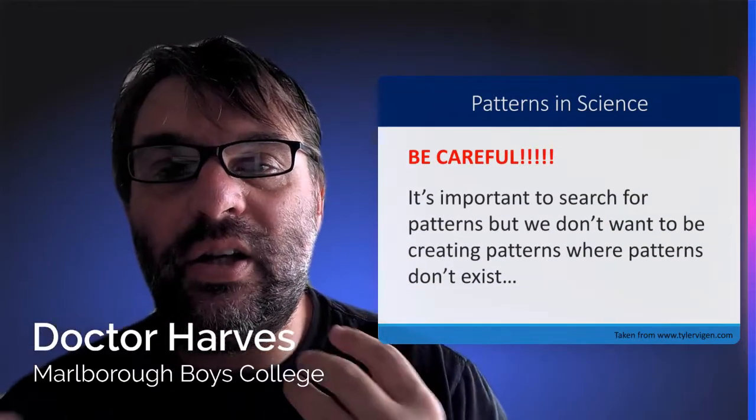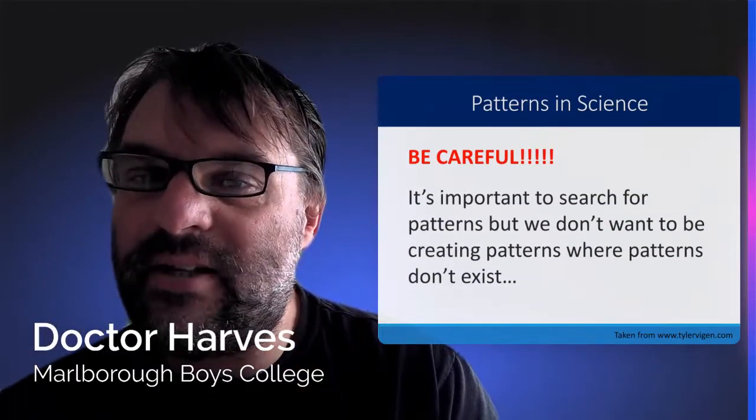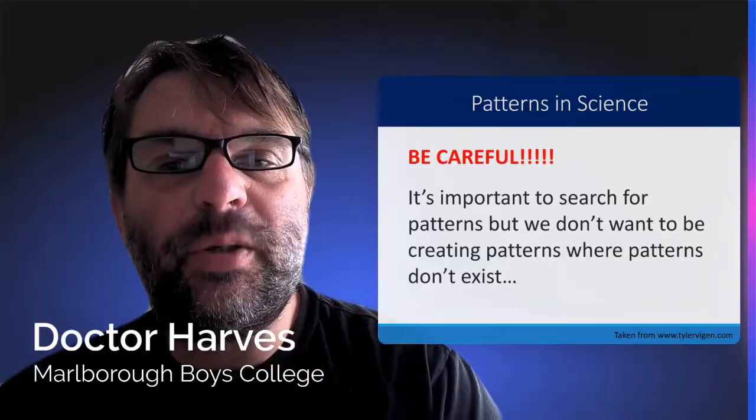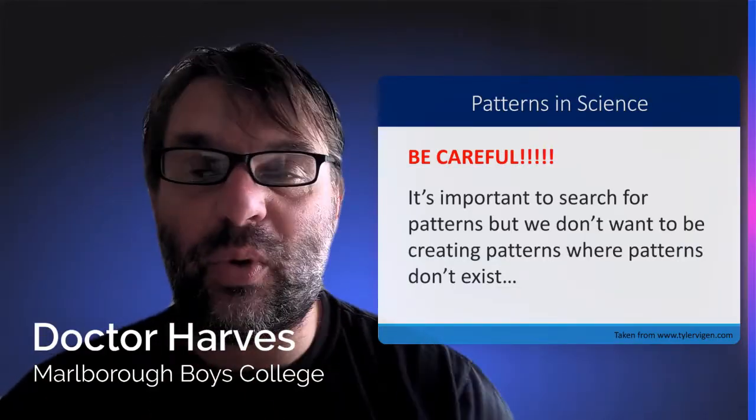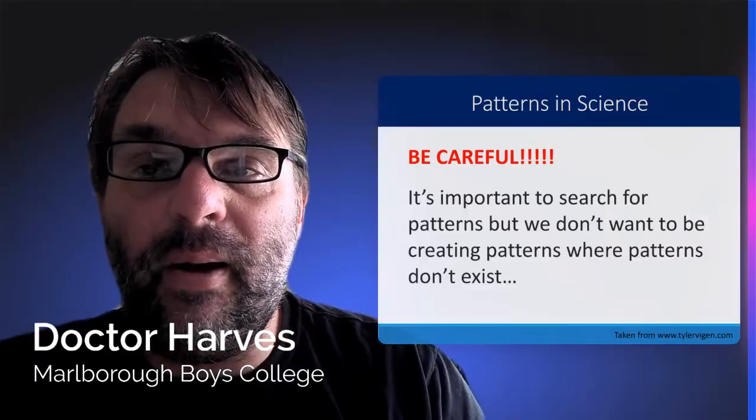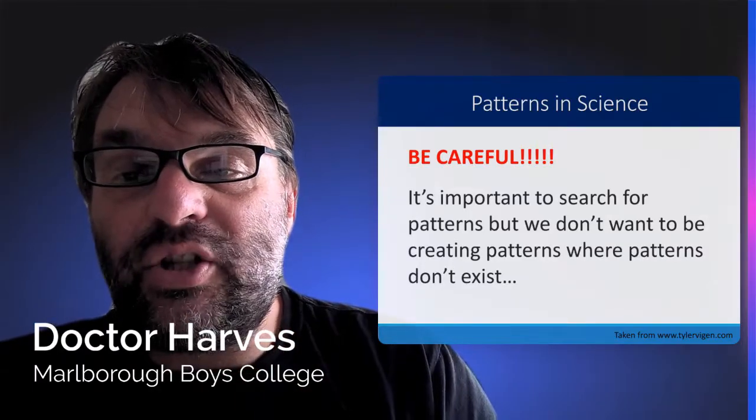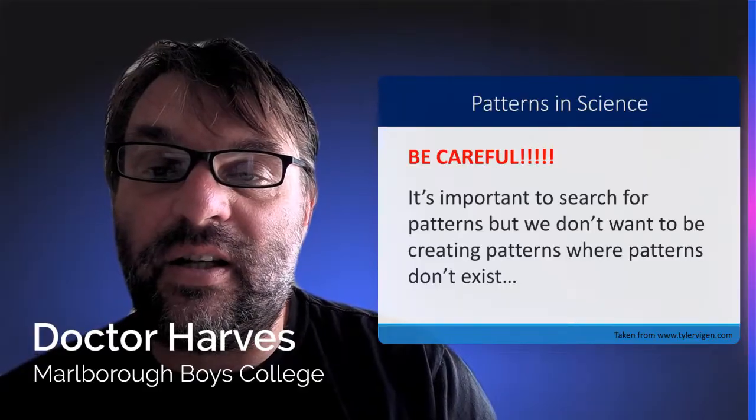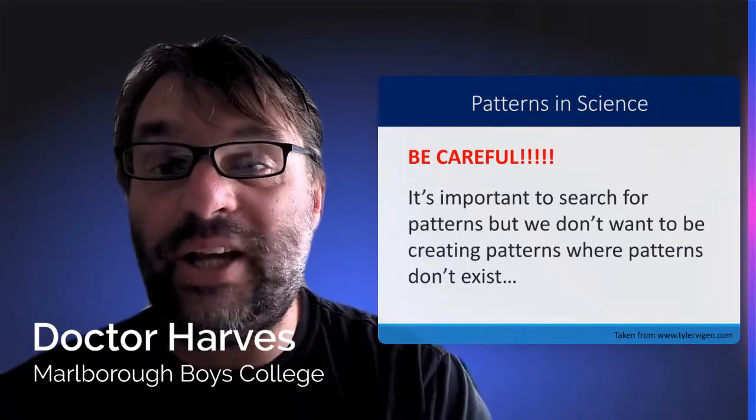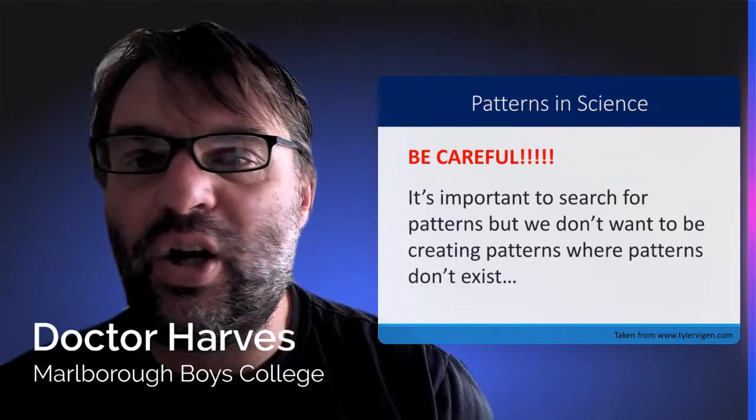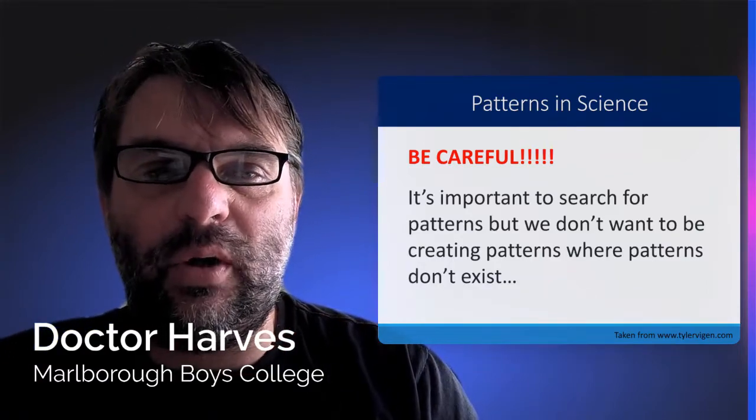The lesson we learned from those two examples is it is important to search for patterns in the universe, but we don't want to be creating patterns where patterns do not exist. That's one of the dangers of making predictions. That's where our knowledge as scientists and physicists can come forward, so we can then tease out the causation rather than the correlation between variables.